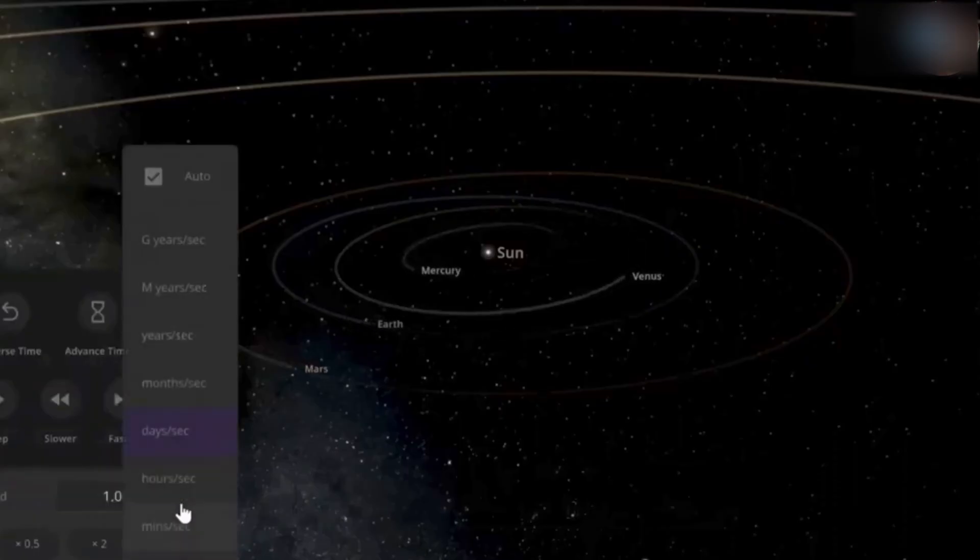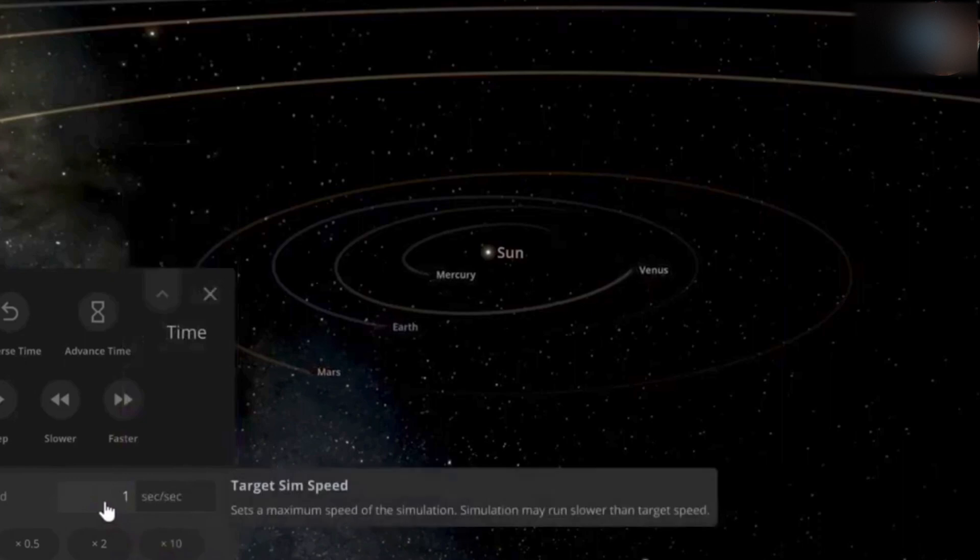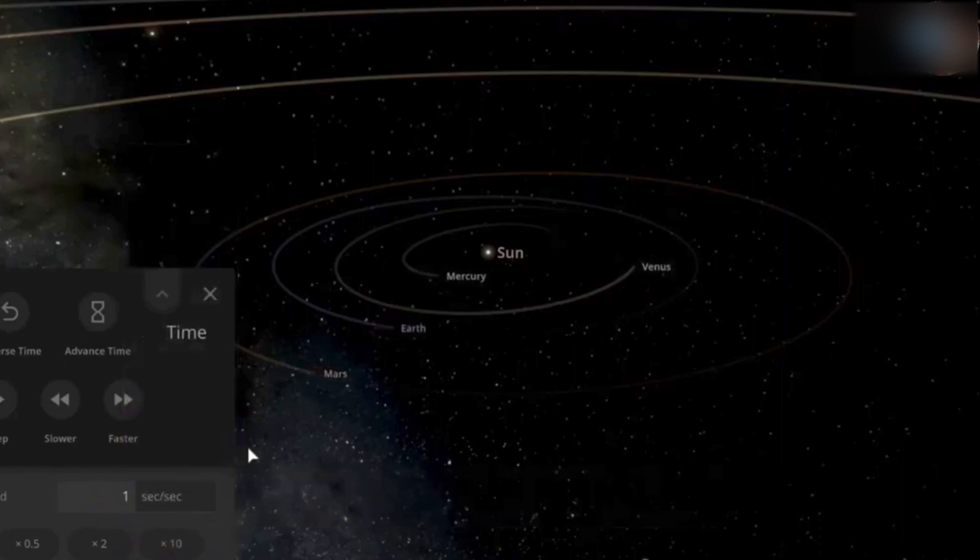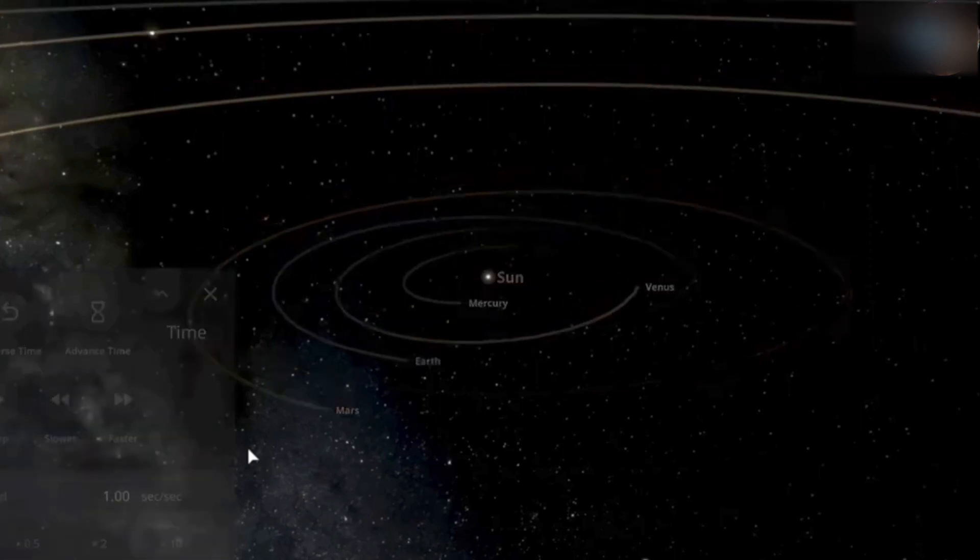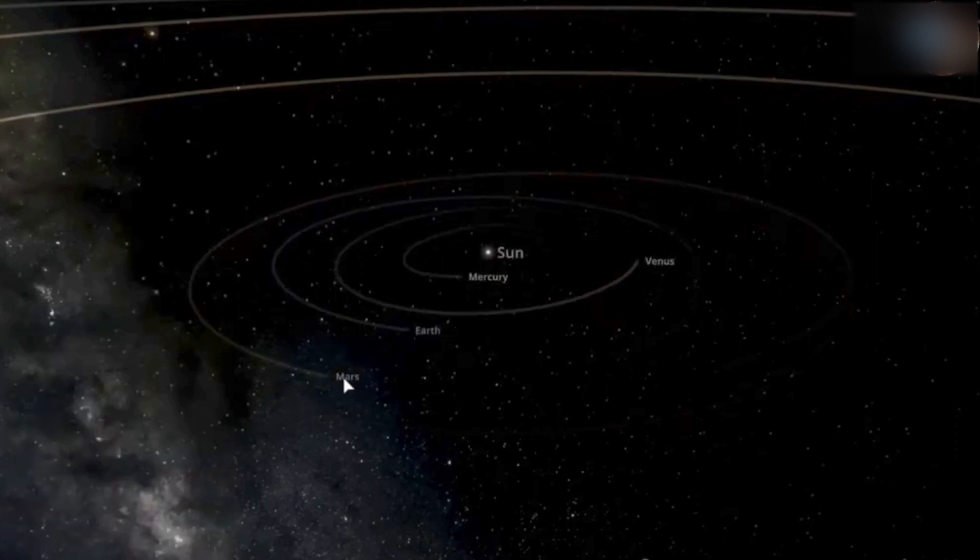Let's start our animation by representing the actual scale, which means that we are not fast forwarding the time. A second in our animation will denote the actual second. As soon as we make it realistic, we can see that the planets are now rotating at their real speed around the sun.